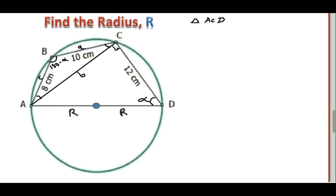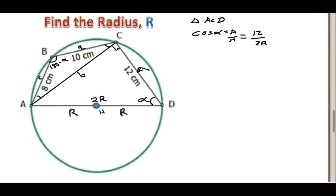Now in triangle ACD, the side AD is the longest side — the hypotenuse — and equals the diameter 2R. We have the adjacent side as 12 and the hypotenuse as 2R. So what is cos alpha? Cos alpha gives the relationship adjacent over hypotenuse, so cos alpha equals 12 over 2R.